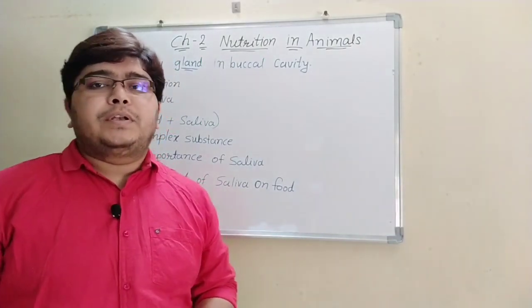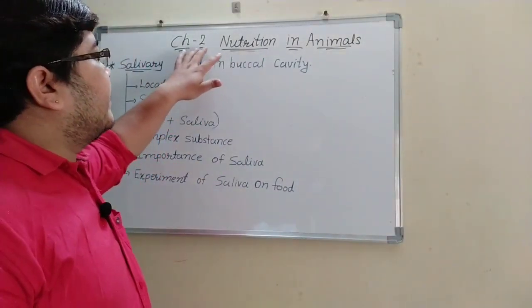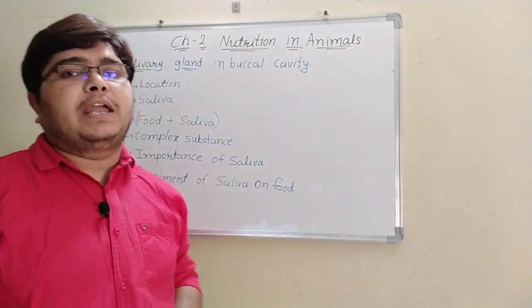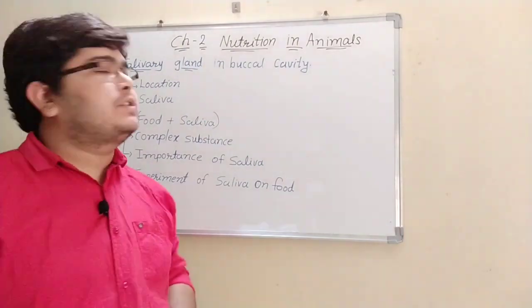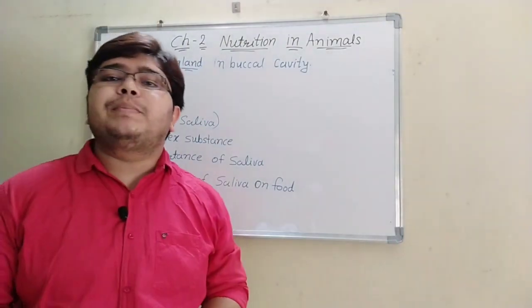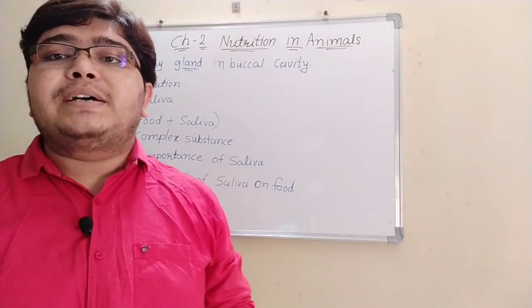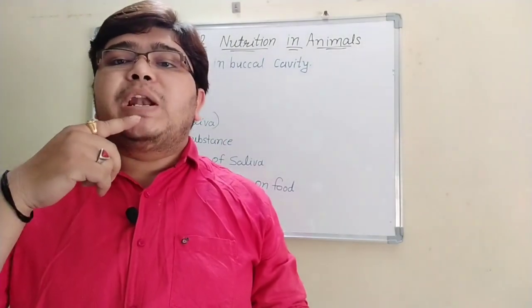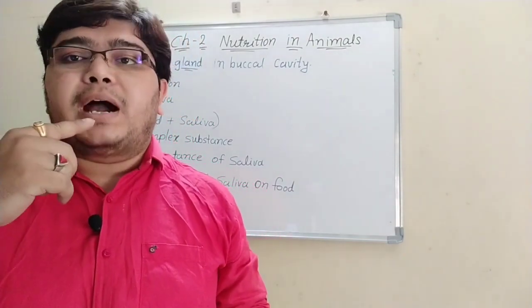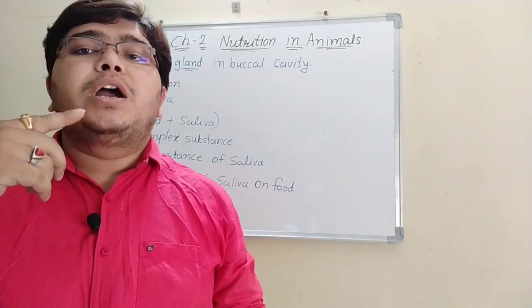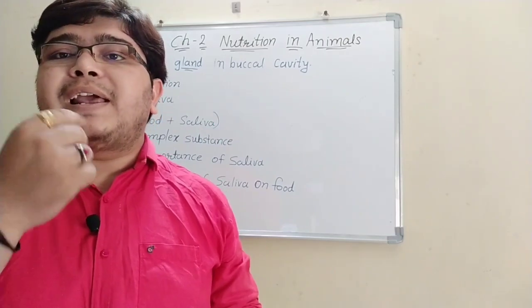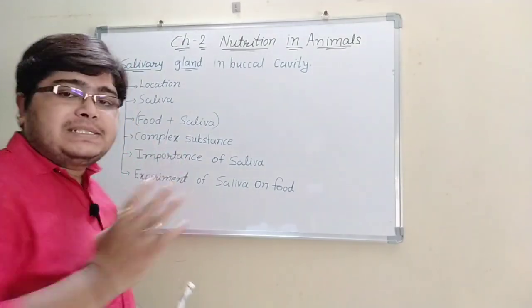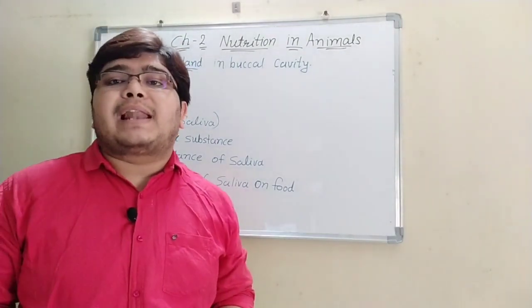Hello everyone. Here we are in chapter number two: Nutrition in Animals. We will learn about the salivary gland in the buccal cavity. The first point is location — where is the salivary gland situated? The salivary gland is situated below your tongue. When you lift up your tongue, you will realize there is a salivary gland present there.